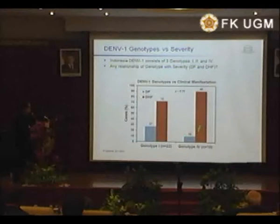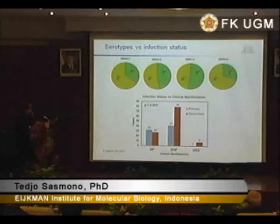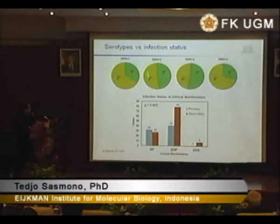Given that Indonesia has three genotypes of dengue 1, we also wanted to know whether there is a relationship between genotype and disease severity. We compared genotype 1 with genotype 4. It appears that genotype 4 is quite high in generating DHF by percentage, but this is also not statistically significant.